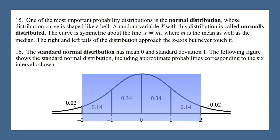Using the diagram and those memorized percentages, we can work out more useful facts. Adding up 14 + 34 + 34 + 14 gives us 96%, meaning 96% of people are within two standard deviations of the mean. These are cool derived facts we don't need to memorize separately, as long as we remember the three key numbers: 2%, 14%, and 34%.